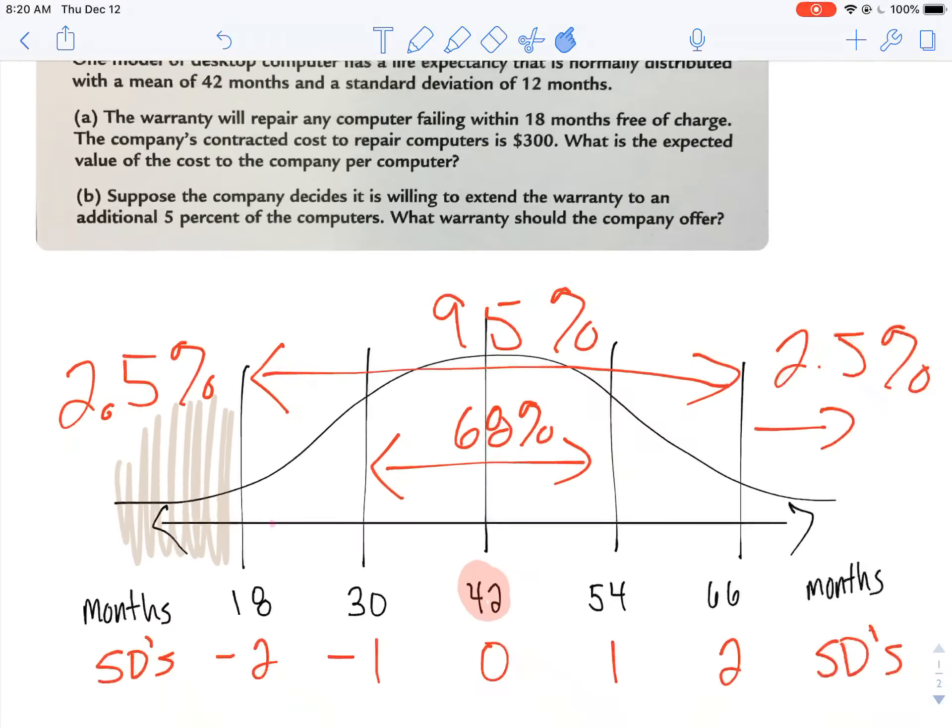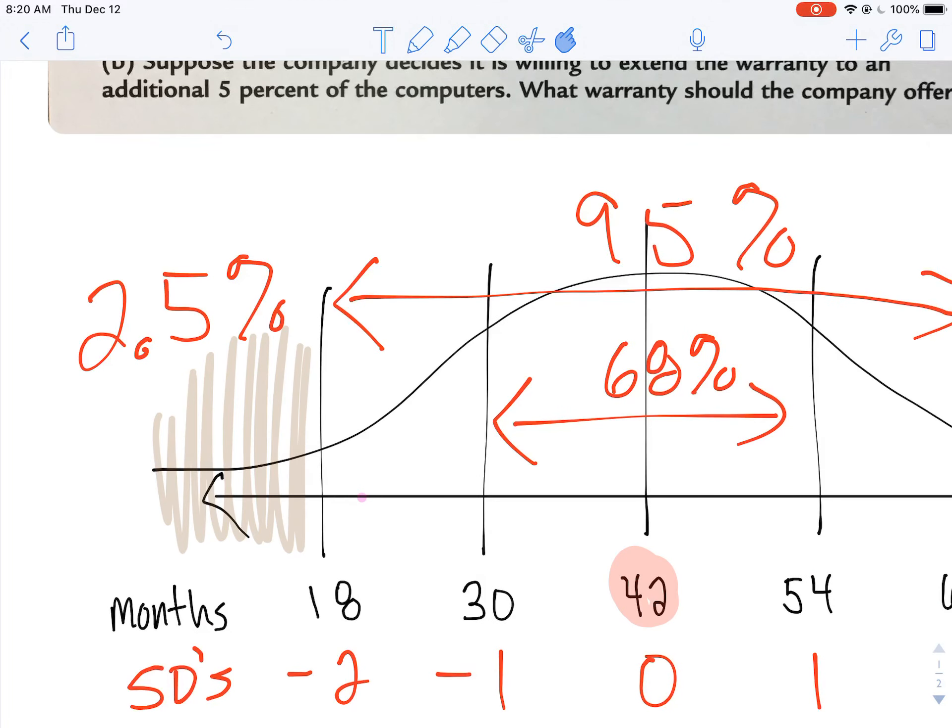So you'll notice here, I highlighted all the computers that would fail less than 18 months after the computer's been sold. This makes sense because if you buy a computer, you'd expect it to last a bit more than 18 months. So the company says, okay, we're going to cover you if it fails before that.